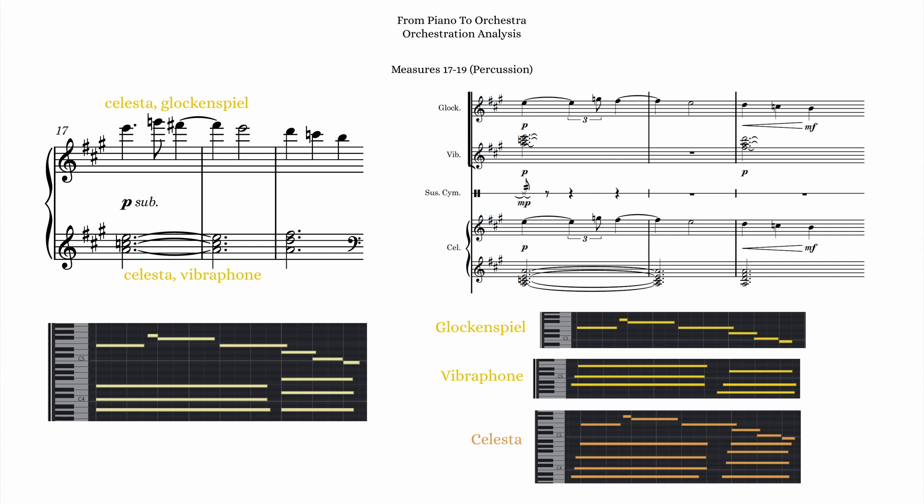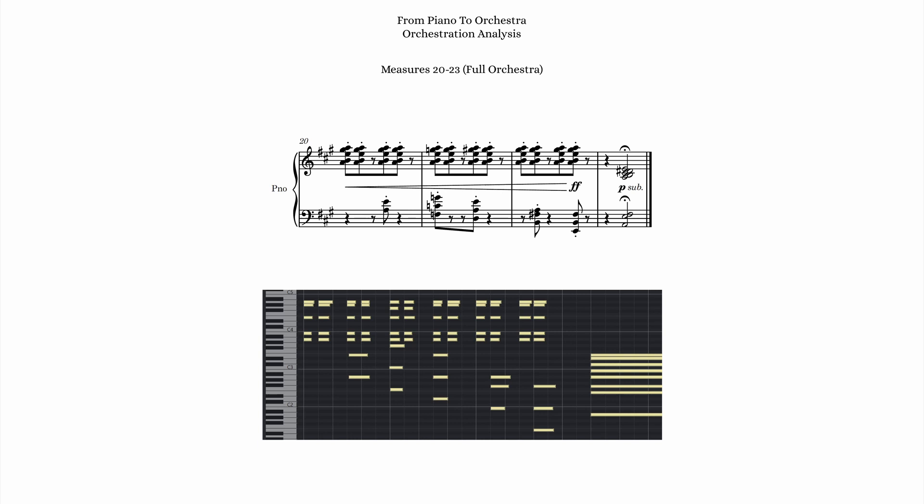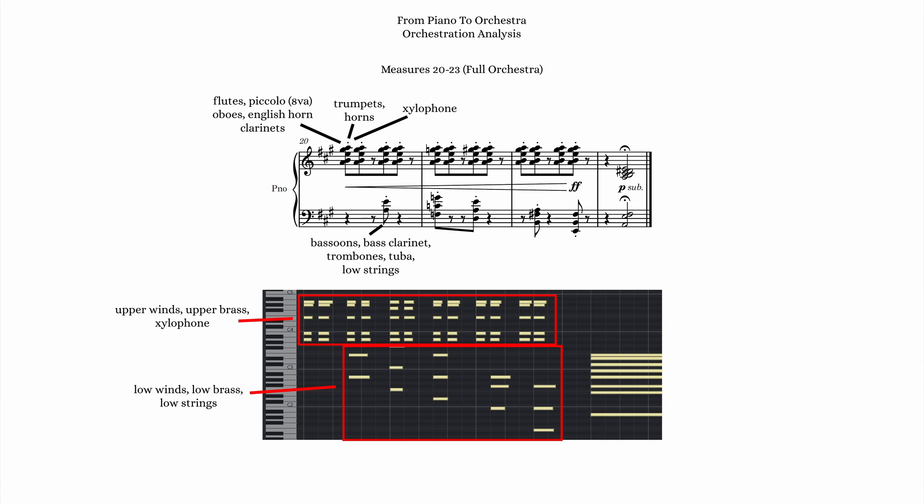Moving on to the last section for measures 20 until the end, there are really just two different things happening in the piano part. The 8th notes in the right hand, which I gave to upper woodwinds, upper brass, and xylophone; and the left hand material, which I gave to low winds, low brass, and low strings. I then gave strings, horns, and low winds the last measure chord.